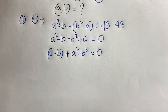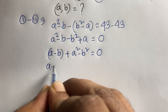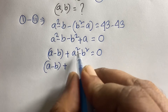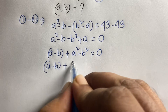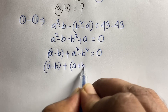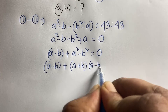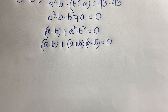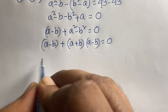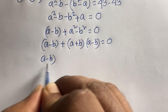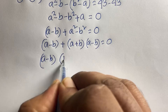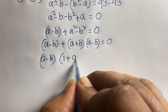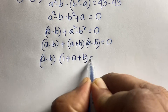This equation becomes: A minus B, plus A squared minus B squared, equals 0. Since A squared minus B squared factors as (A plus B)(A minus B), we get (A minus B) times 1 plus (A plus B) equals 0.